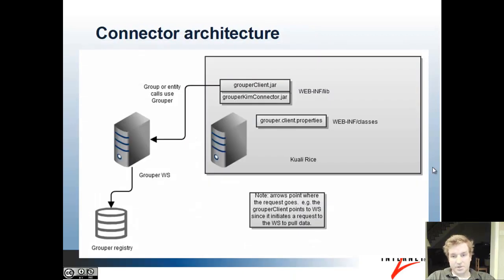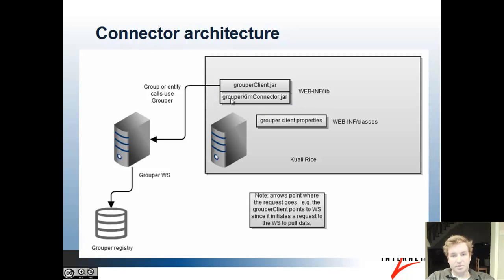The connector architecture generally has the software product, and then if it's Java-based, it can use the grouper client to connect to web services. So in web-inf-lib, you'll have the grouper client.jar, and in web-inf-classes, since this is a web application, we have the grouper.client.properties, and then the glue that implements the software's group API by using calls to the grouper client. In this case, the grouper connector.jar would also be in the web implementation.